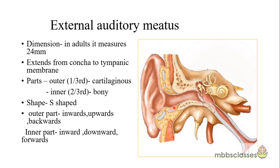It has two components. The outer one-third is cartilaginous, constituting one-third of the length of the meatus, which is around 8 mm. The inner two-thirds is formed by the bony meatus, which is a part of the temporal bone. So the outer one-third is cartilaginous at 8 mm, and the inner two-thirds is bony at 16 mm, giving a total length of 24 mm.